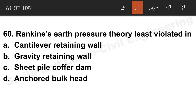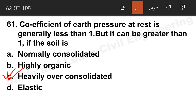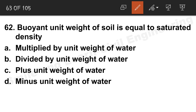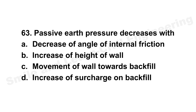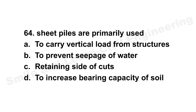Question 60: Rankine's earth pressure theory is least violated in the case of a cantilever retaining wall. Option A seems correct. Question 61: Coefficient of earth pressure at rest is generally less than one, but can be greater than one if the soil is heavily over-consolidated.